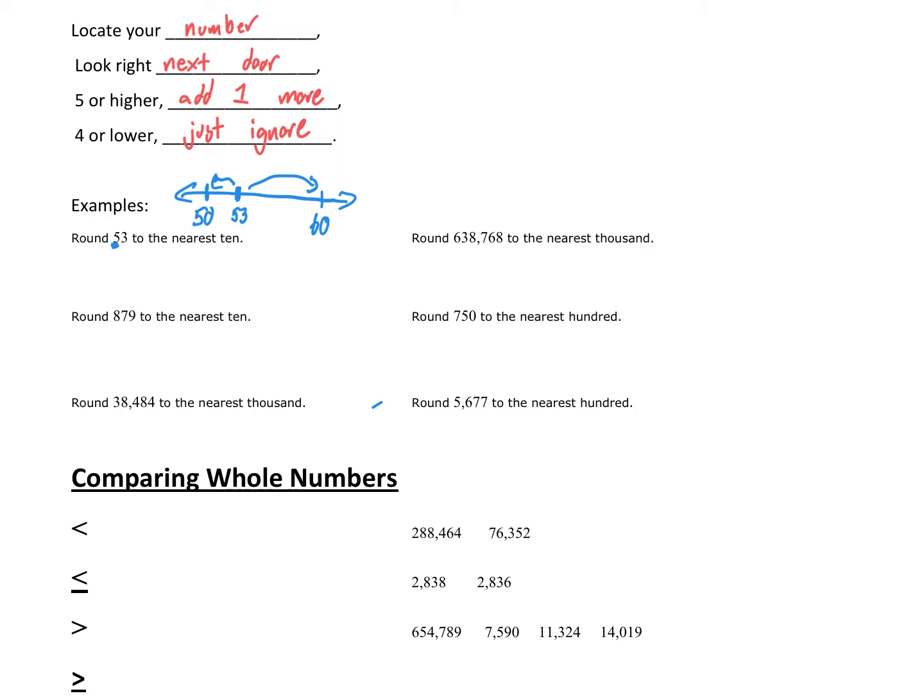So we're going to locate our number. Five is in the tens place. Look right next door. It's a three. Is it five or higher? No. Four or lower, we just ignore. My answer is 50.